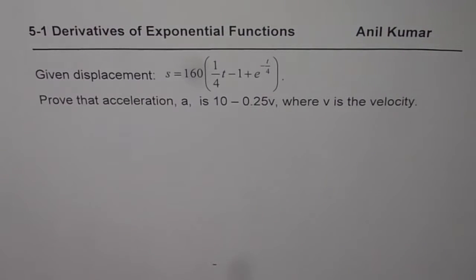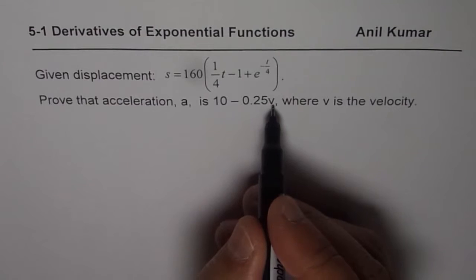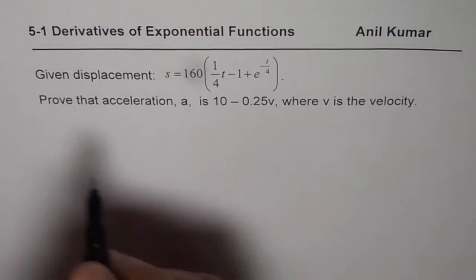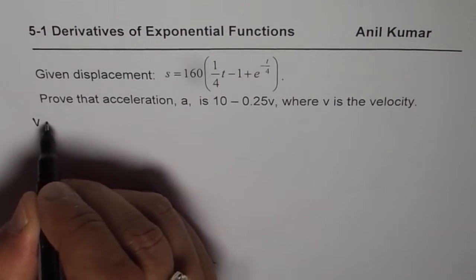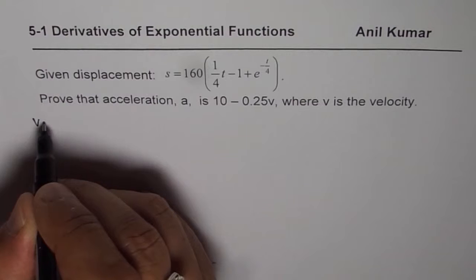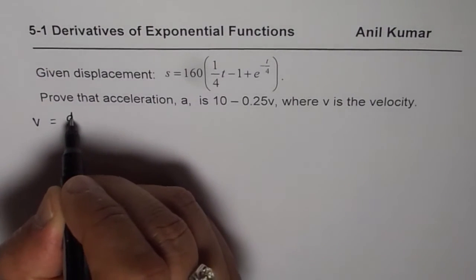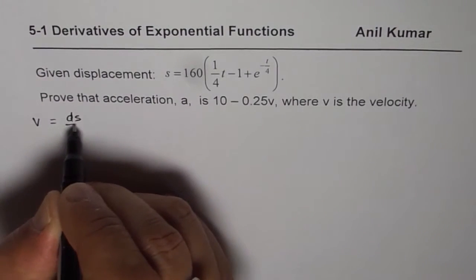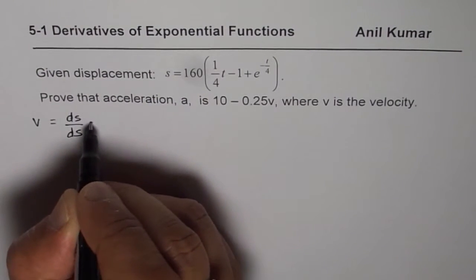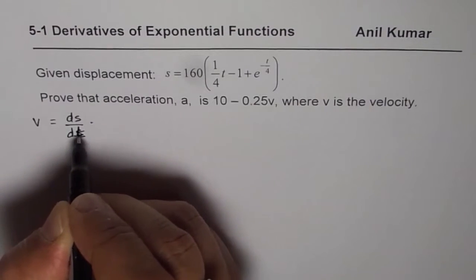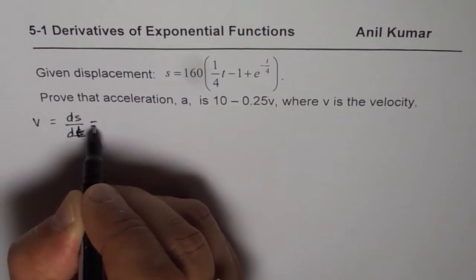I would like you to pause the video and answer the question — here is my suggestion. Velocity v is the rate of change of displacement, so we can write velocity as ds over dt, the rate of change of displacement.